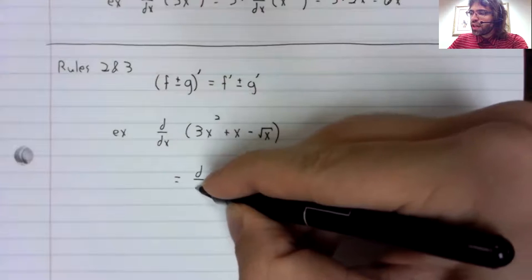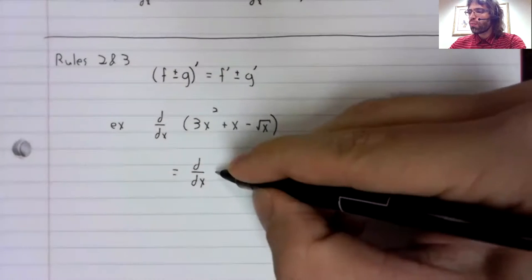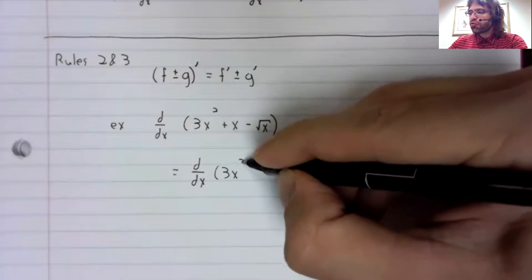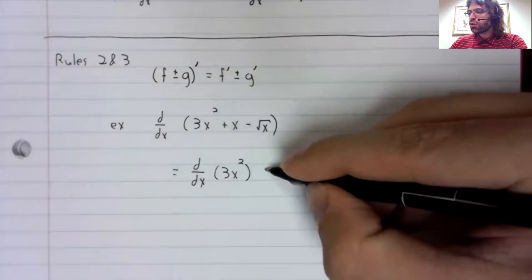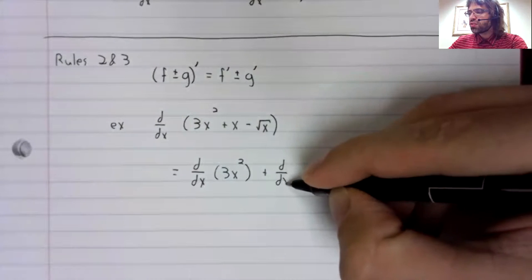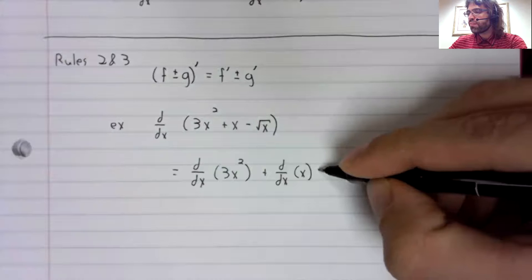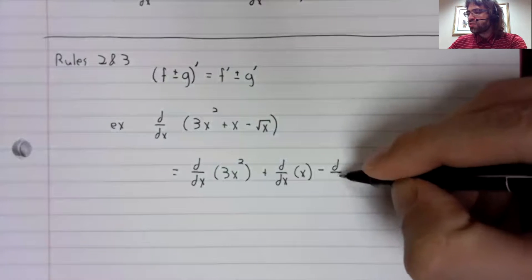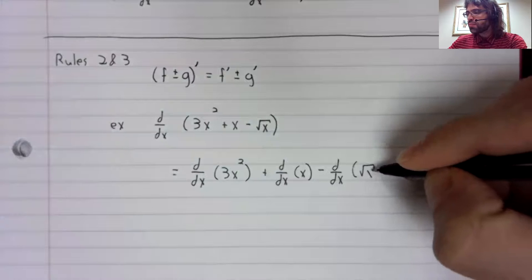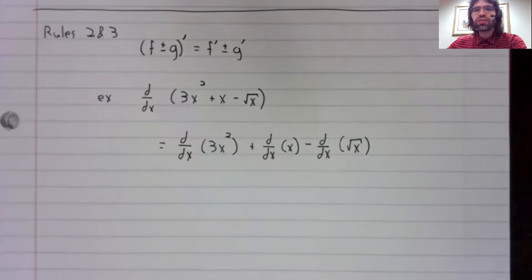This is the derivative of 3x² plus the derivative of x minus the derivative of the square root of x.